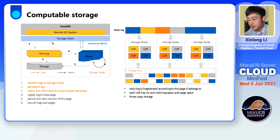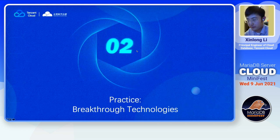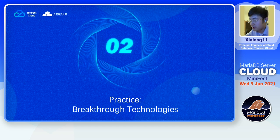The physical structure of storage is introduced below. The data in storage across different storage nodes has its own physical resources — in short, separated physical servers. Each storage node has a storage cell, and each cell has its own redo log space and page space. Redo log is fragmented according to its page, and each cell has three copies. After introducing the architecture of the cloud native database, the following will further introduce some breakthrough technologies of the cloud native database.